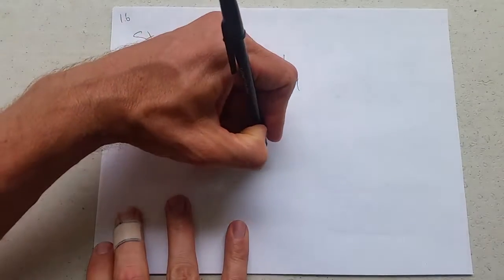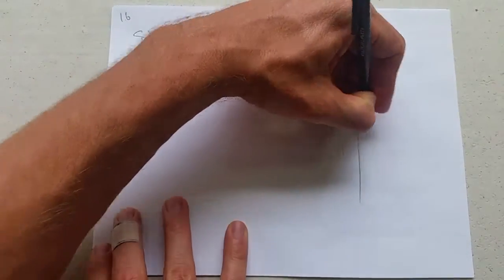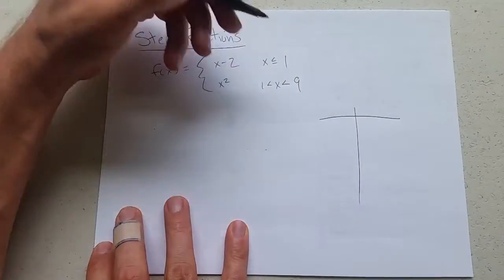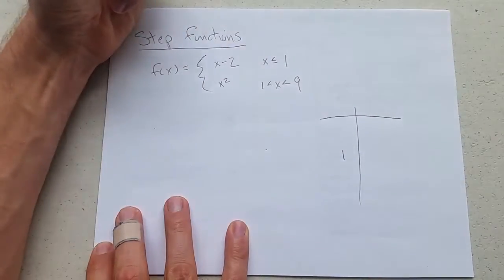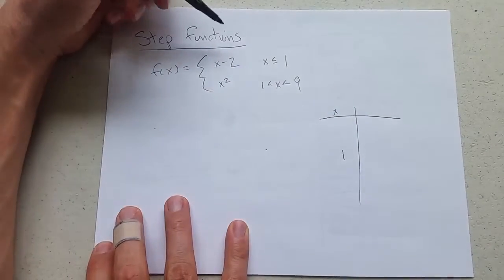How do we go about graphing this? We're going to use a table of values. Now 1 is pretty important. When x is 1 what is y?